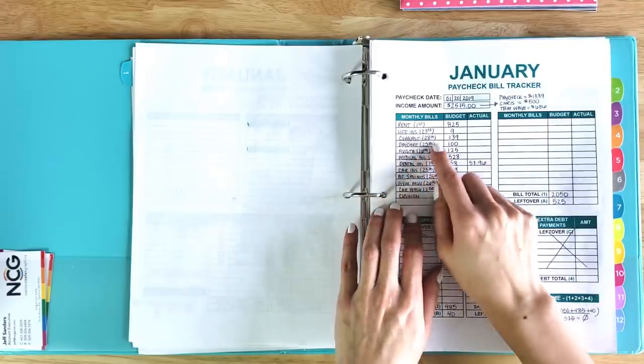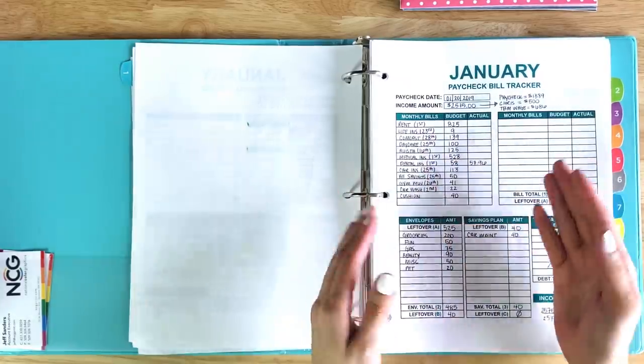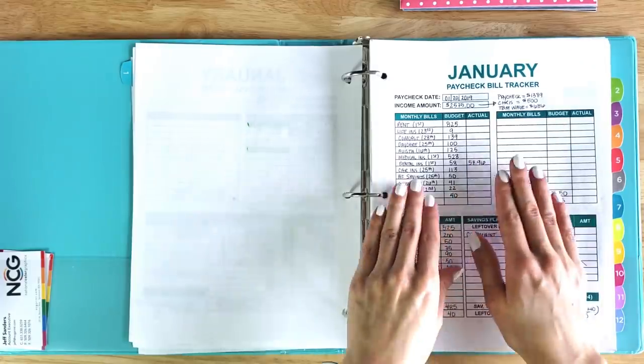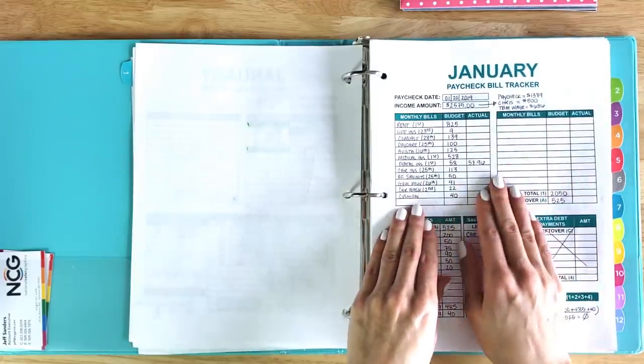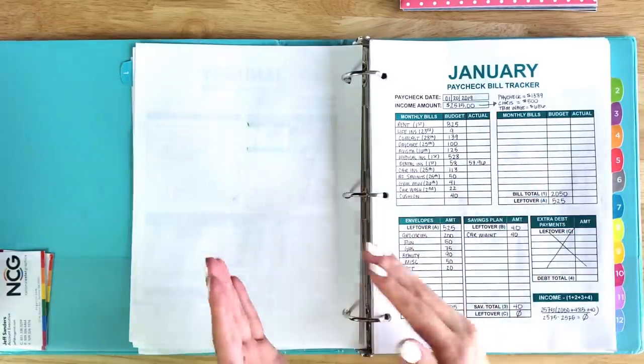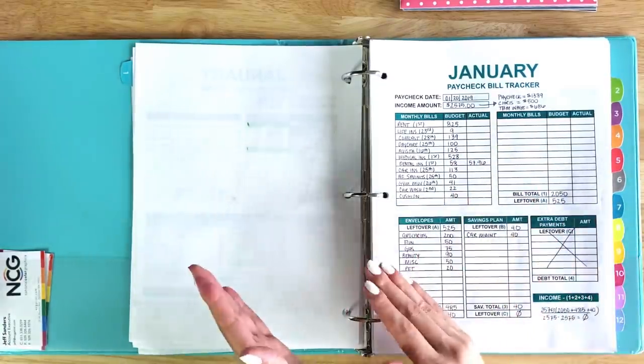Comcast is cable and internet. Like I said, my regular bills might look different from yours, but that's okay. The most important thing to remember when you're doing a budget or a paycheck budget is to make sure that your regular bills are being paid first. Those are your priority bills that just need to be paid.